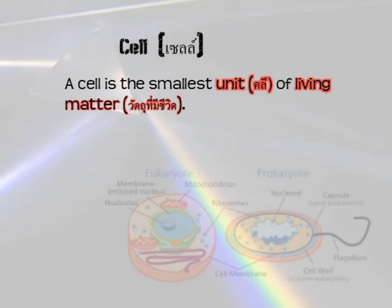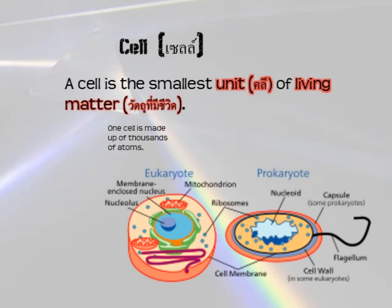The next word is a cell — the smallest unit of living matter. One cell is made up of thousands, or maybe even millions, of atoms. Every cell is alive, and many cells together make up every living thing like you, a cat, a dog, or an elephant. All living things are made up of cells.